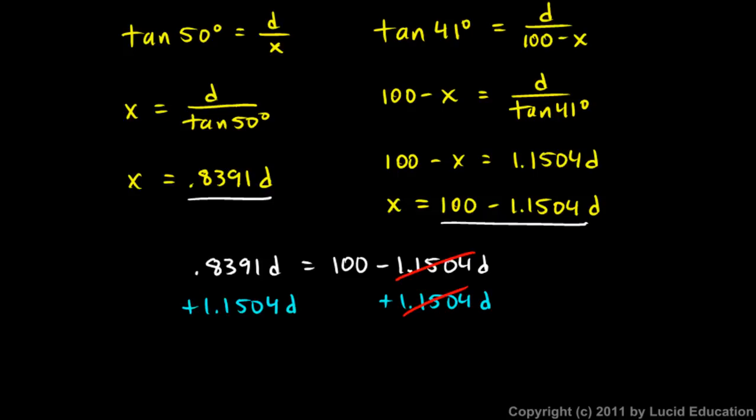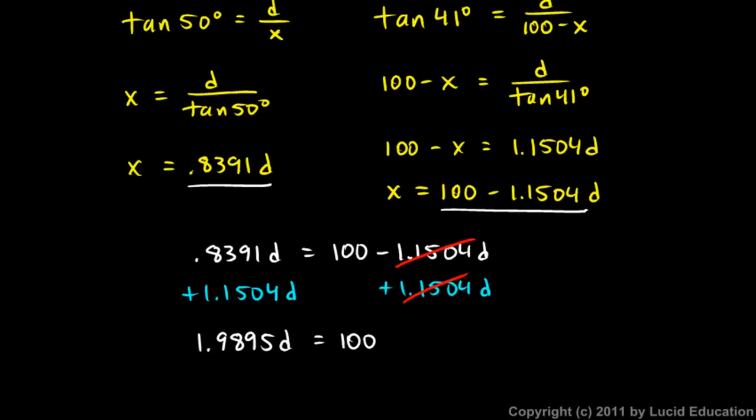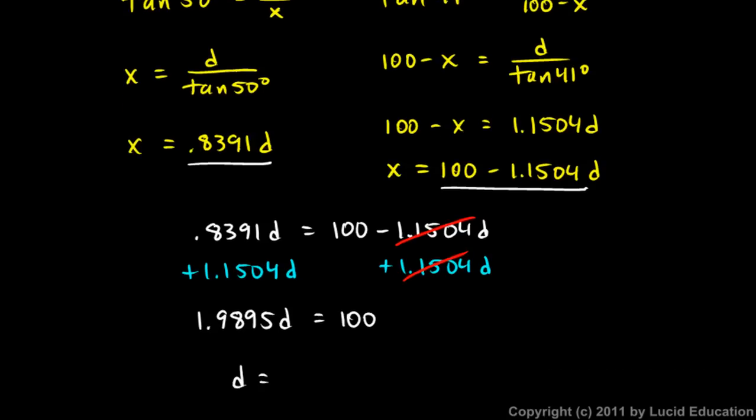That gets rid of those. And on the left, .8391D plus 1.1504D gives me 1.9895D equals 100. So D must be 100 over 1.9895. And that comes out to 50.3 meters.